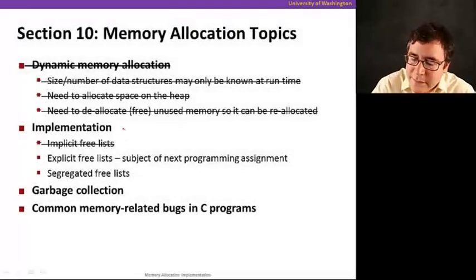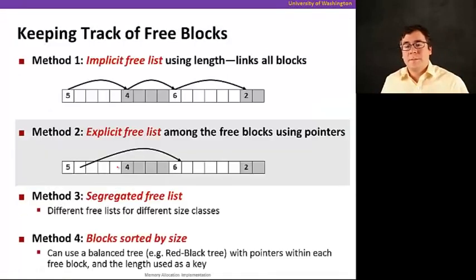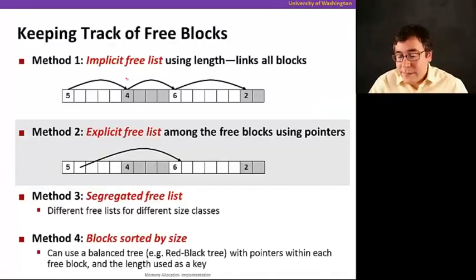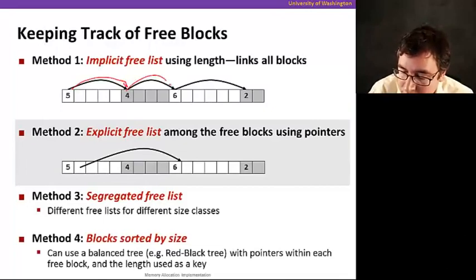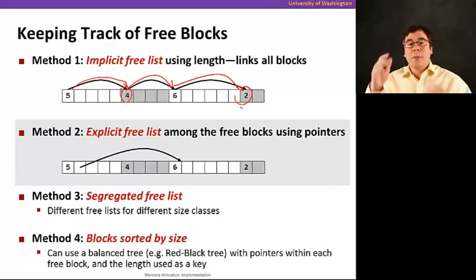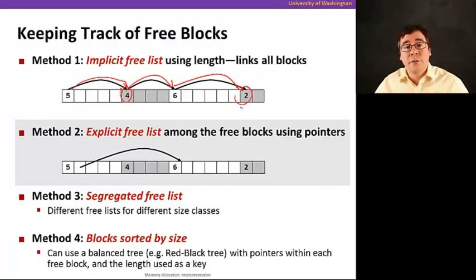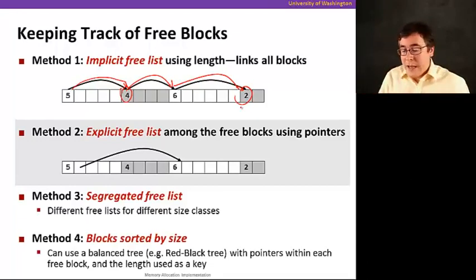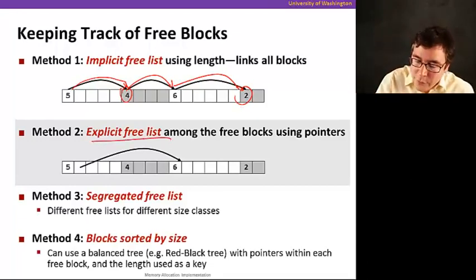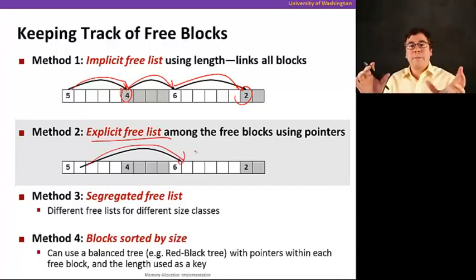Now that we know how implicit free lists work, let's look at explicit free lists. With an implicit free list, we called it implicit because we could traverse the entire heap and knew implicitly, based on a bit that tells us whether the block is allocated or free. It was implicit because we had to traverse it to figure it out. With an explicit free list, we're going to link free blocks together explicitly.